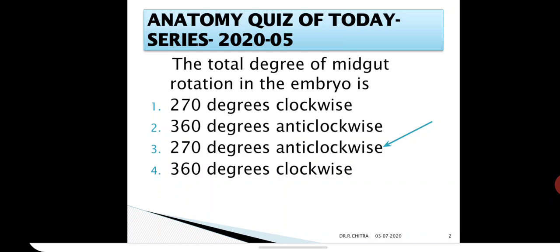The first 90 degree of rotation takes place within the physiological umbilical hernia, from 5th week to 10th week. The remaining 180 degrees occurs within the abdomen after the midgut is reduced from the umbilical coelom.